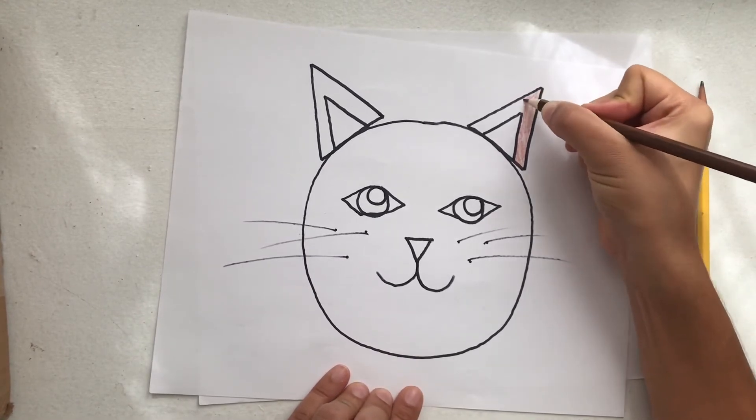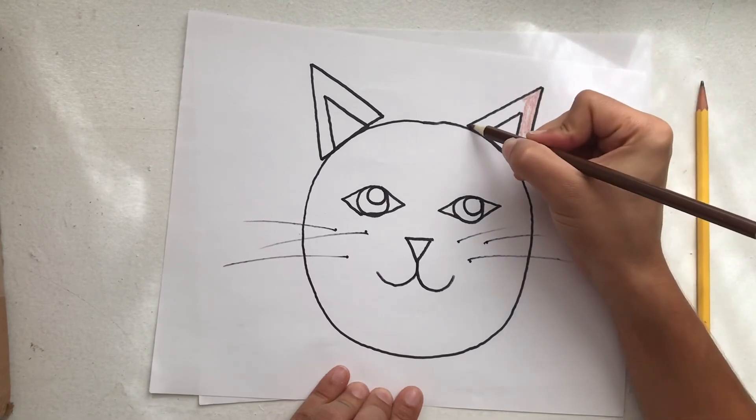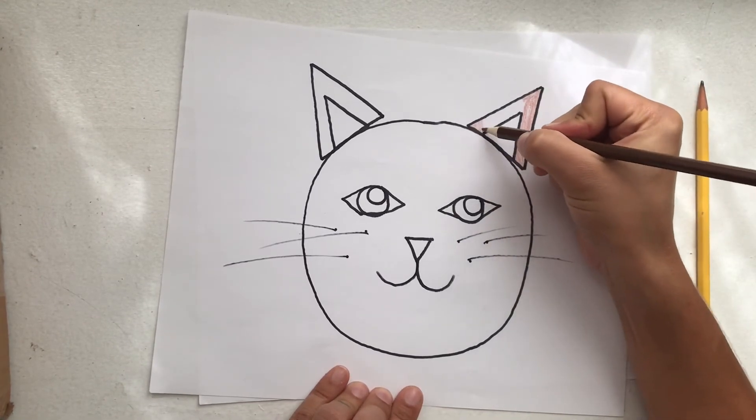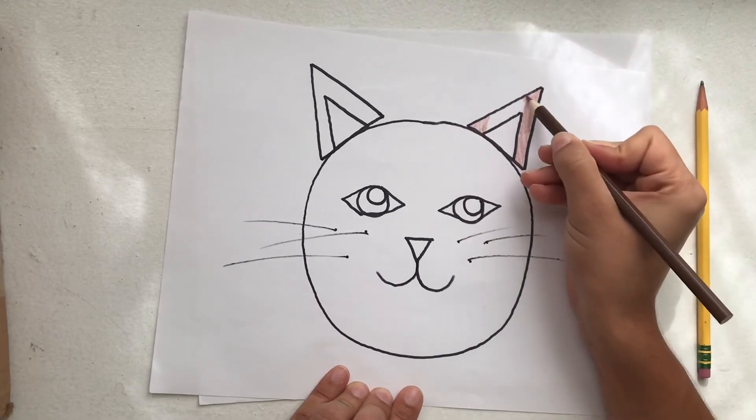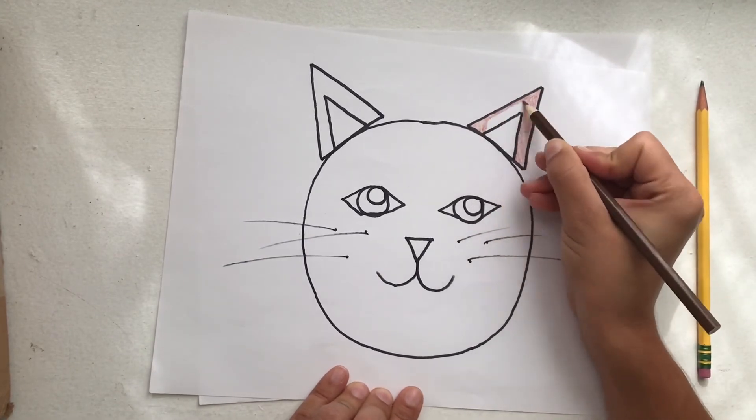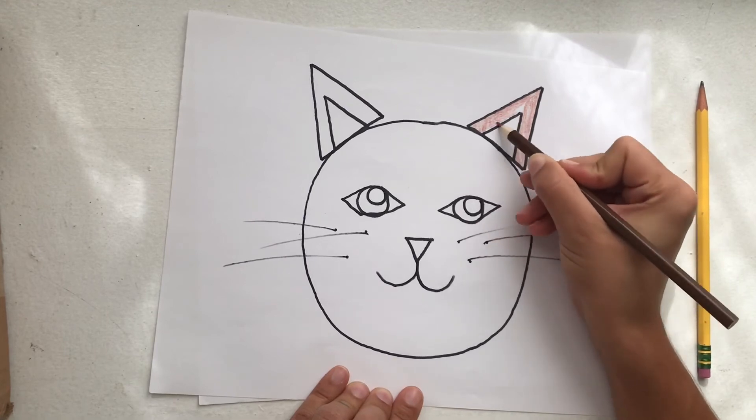I've seen black cats, gray cats, orange cats, white cats. I've seen cats with stripes and spots. So you can create your cat in any color you would like.